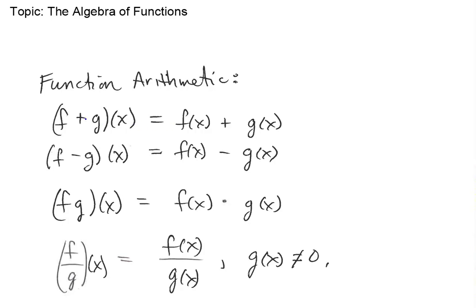This works not only for addition but also subtraction: (f - g)(x) equals f(x) minus g(x). Then (f · g)(x) equals f(x) times g(x). And fourthly, (f / g)(x) equals f(x) divided by g(x), with one extra provision: we can't let the denominator function equal zero, because we can't divide by zero.